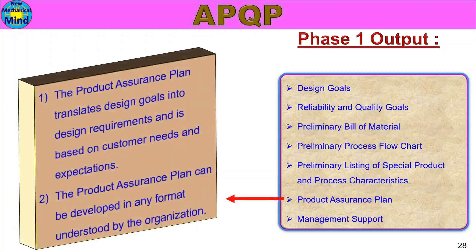The Product Assurance Plan translates design goals into design requirements and is based on customer needs and expectations. It can be developed in any format understood by the organization. It covers the application requirements, warranty time, and endurance test requirements.